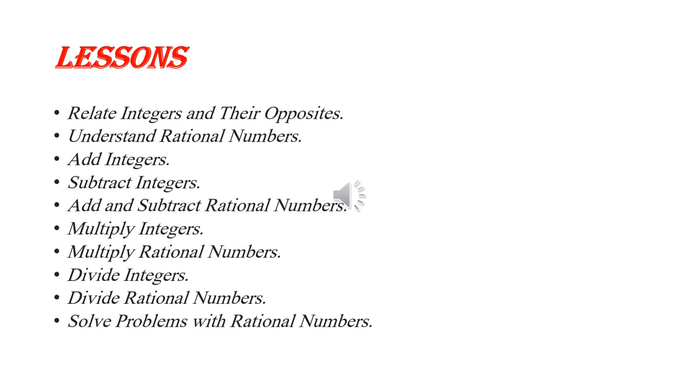Subtracting is similar. To subtract integers, change the subtraction sign to addition and change the sign of the integer being subtracted, then follow the rules of addition. For example, subtracting negative three from seven becomes seven plus three, which equals ten.